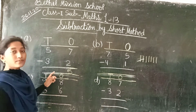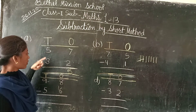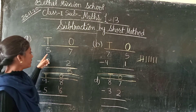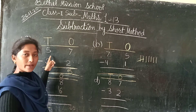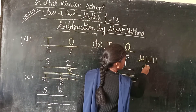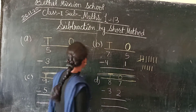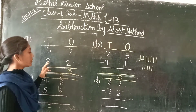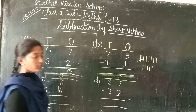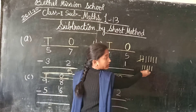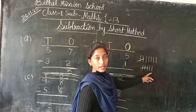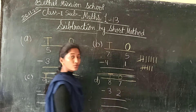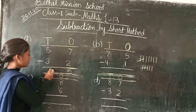Next we have to subtract the tens from tens — 5 tens minus 3 tens. So we will draw 5 lines: 1, 2, 3, 4, 5. And 5 minus 3, means we have to cut 3 lines: 1, 2, 3. How many are left? 1, 2. So we will write here 2.